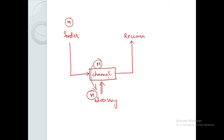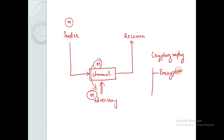So how do we use cryptography? Cryptography basically involves two techniques. The first one is encryption and the second one is decryption. Encryption uses an encryption algorithm, and decryption uses a decryption algorithm.